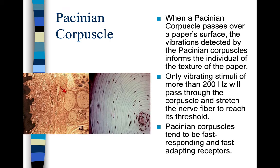When a Pacinian corpuscle passes over a paper's surface, the vibrations detected inform the individual of the texture of the paper. Only vibrating stimuli of more than 200 hertz will pass through the corpuscle and stretch the nerve fiber to reach its threshold. Pacinian corpuscles tend to be fast-responding and fast-adapting receptors.